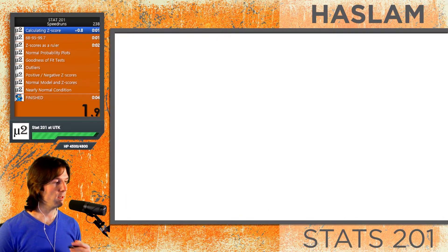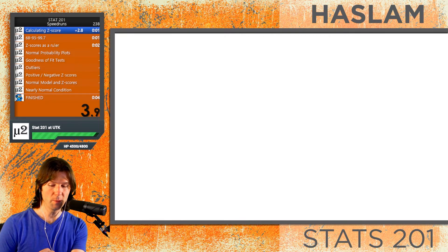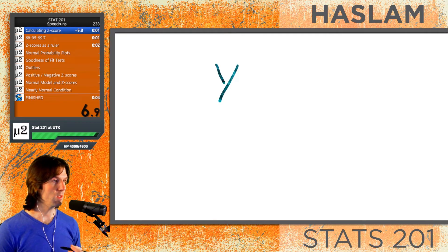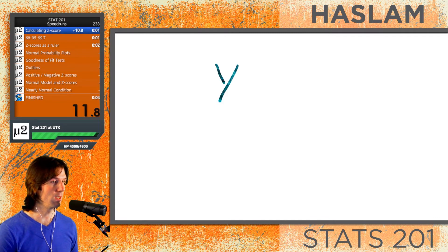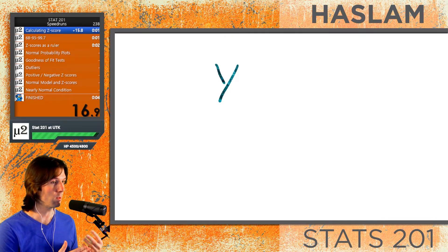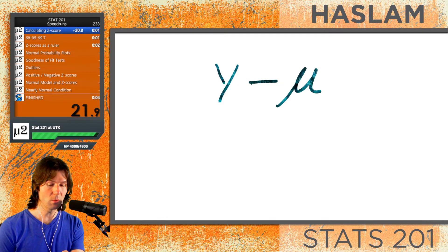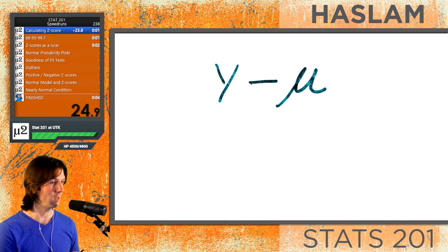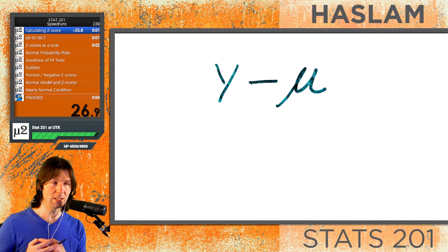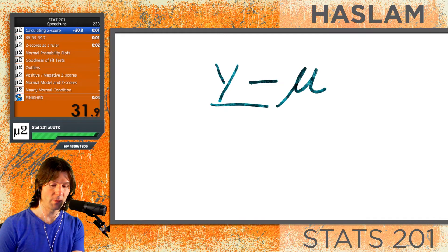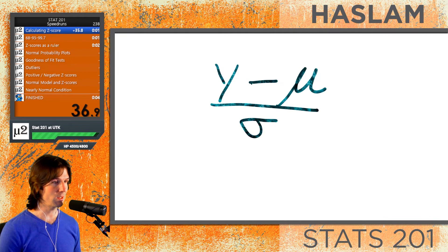The first thing we want to understand is how to calculate a z-score. The formula for a z-score starts with the observation — something like your height or a score on a test, a singular observed value. We then subtract the mean, which is the average of the distribution, represented by mu. This difference is then standardized by the standard deviation of the population, which is sigma.